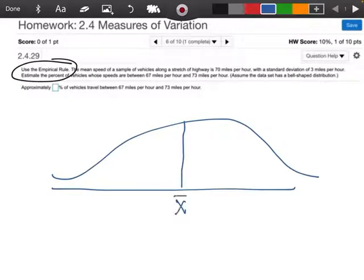And my x bar in this case, our mean is 70, right? And it says the standard deviation is 3 miles an hour. So remember what that means.